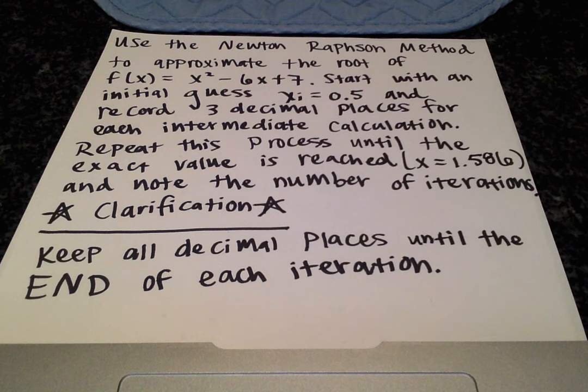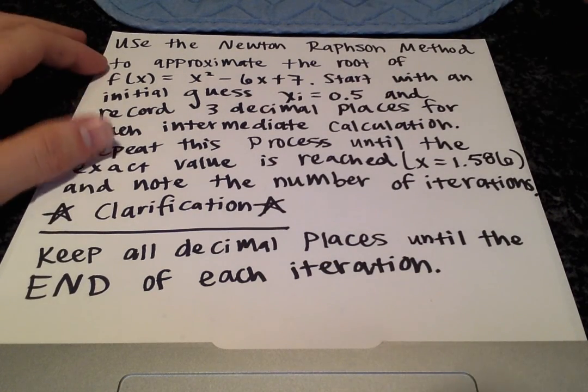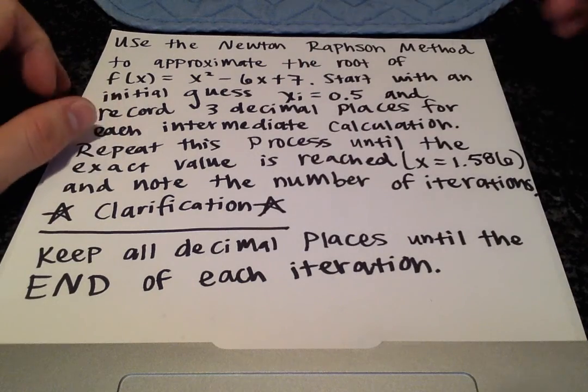Okay, here we have a numerical methods example. It's an example with the Newton-Raphson method. And it's a quite lengthy problem, but let's extract the important bits of information so we can solve it. So we want to use the Newton-Raphson method to approximate the root of the function x squared minus 6x plus 7.